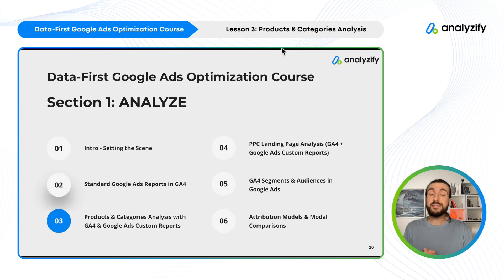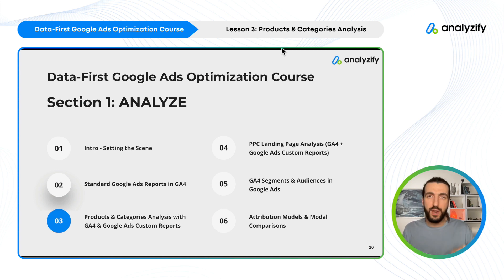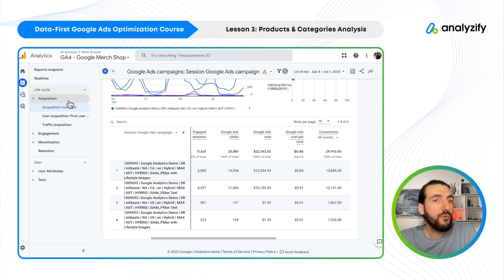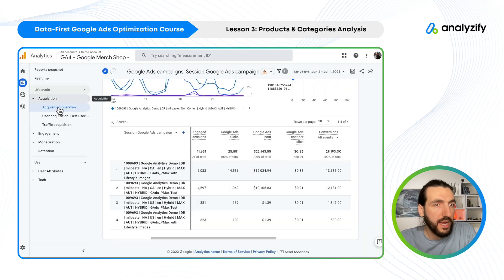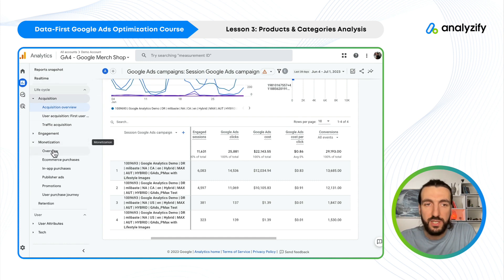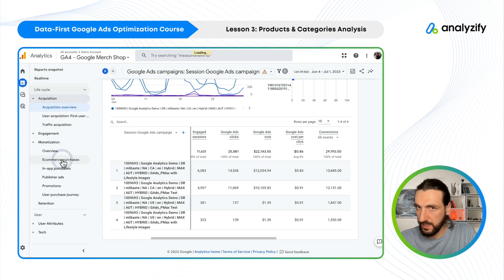So we want to do that. Without further ado, let's get started. Let's get into the GA4 account where we will analyze product-level performance. When I am on the GA4 account, I need to go into Monetization and then E-commerce Purchases.